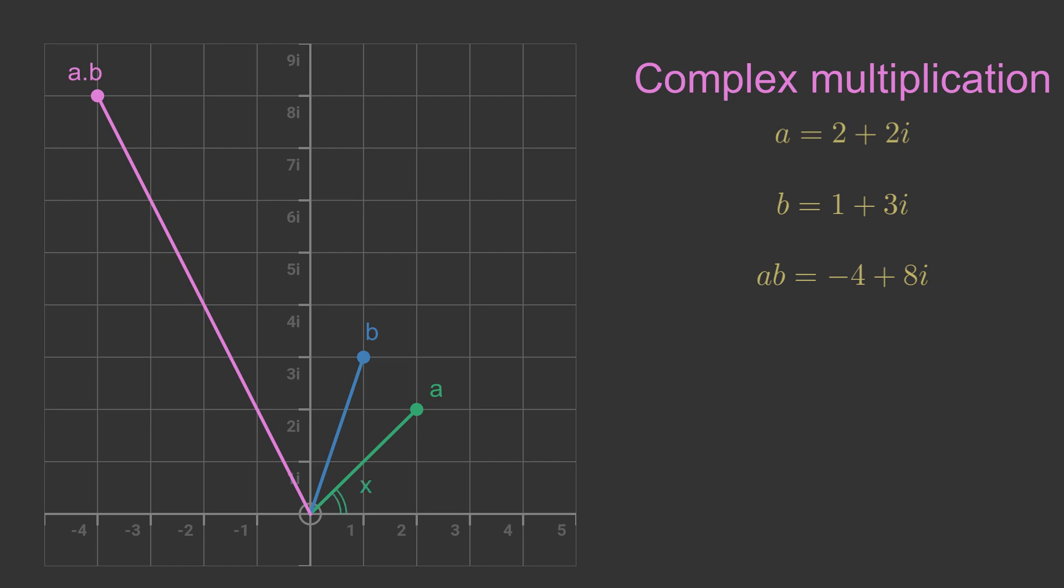Let's mark the angle between a and the x-axis and call it x. The angle between point b and the new point ab is also equal to angle x. So multiplying b by a has the effect of rotating b by the angle of a.